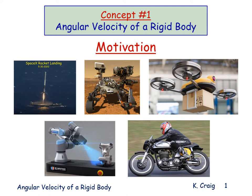The first mechatronic essential concept is angular velocity of a rigid body. The motivation for this concept comes from current events: the SpaceX rocket landing on a platform in the middle of the ocean, the Mars rover Perseverance landing on the Mars surface, packages being delivered by drones, parts being scanned three-dimensionally for tolerances, and motorcycle dynamics — all require a three-dimensional approach to dynamic analysis.